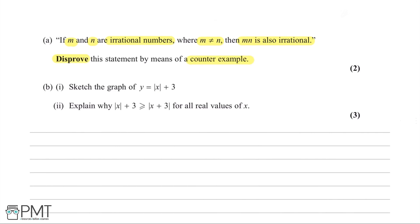Let's first discuss what an irrational number is. A rational number is anything that cannot be expressed as a fraction. For example, 22 over 7 is a fraction, therefore it is rational. The number 4 can be expressed as 4 over 1, therefore it is not irrational. Even 2.5 can be expressed as 5 over 2, therefore it is not irrational.